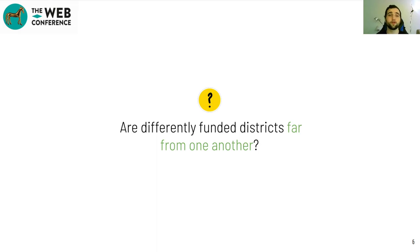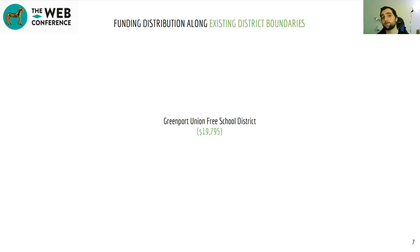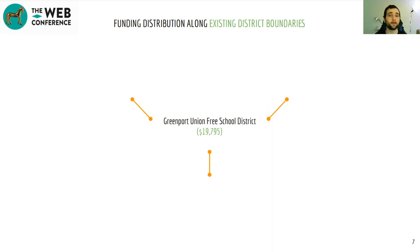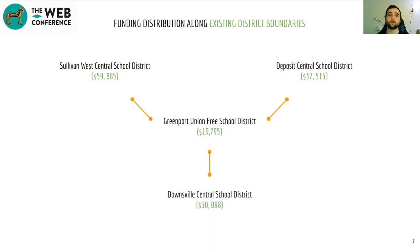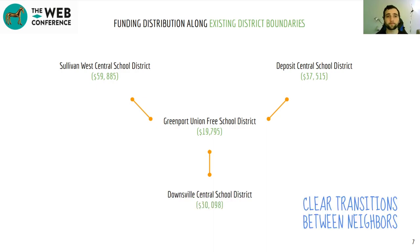There seems to be no relation between distance and difference in funding. Take the Greenport Union Free School District in New York, which receives around $19,000 per student yearly. This district neighbors the Sullivan West Central School District, the Deposit Central School District, and the Downsville Central School District, which receive over $59,000, $37,000, and $30,000 per student respectively — clear differences among immediate neighbors.